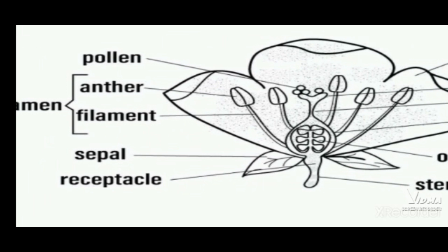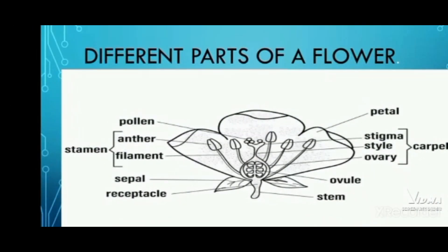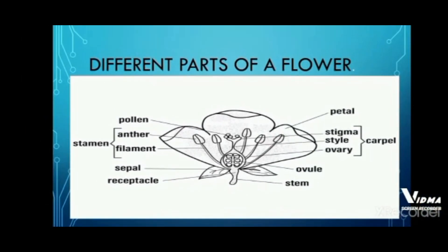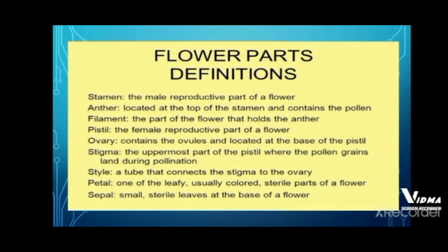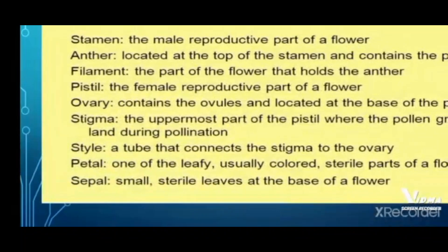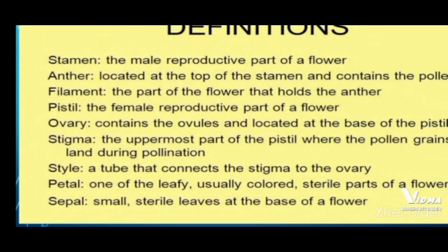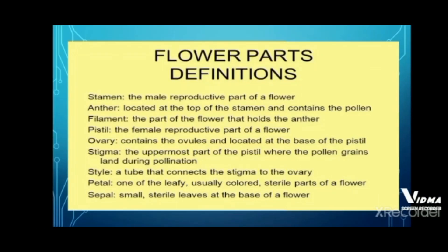The sepal is the green-colored small leaf present below the petals. The main reproductive part is called the stamen, which contains the anther and filament. Inside the anther there is pollen. These are the pollen which are transferred from one flower to another for pollination. The stamen is the main male reproductive part. The anther is located inside the stamen. The filament holds the anther. The stigma, style, and ovary together form the female reproductive part. Petals are colorful and sepals are the green part of the flower.